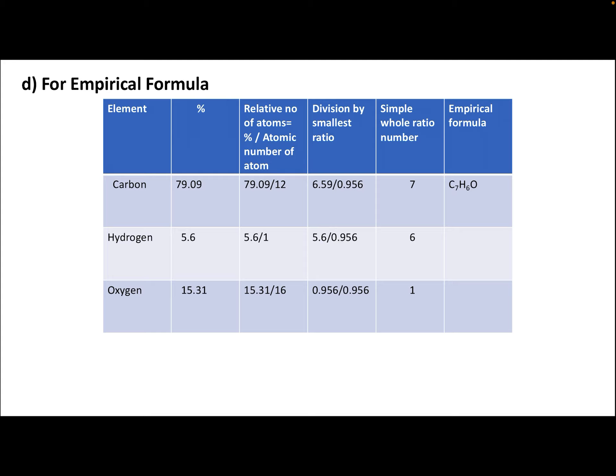For the empirical formula, we draw a chart with columns: element, percentage, relative number of atoms (percentage ÷ atomic weight), and simplest ratio. Carbon: 79.09 ÷ 12 = 6.59. Hydrogen: 5.6 ÷ 1 = 5.6. Oxygen: 15.31 ÷ 16 = 0.956. The smallest ratio is 0.956. Dividing each by 0.956 gives: C = 6.59/0.956 ≈ 7, H = 5.6/0.956 ≈ 6, O = 1. Therefore the empirical formula is C₇H₆O.